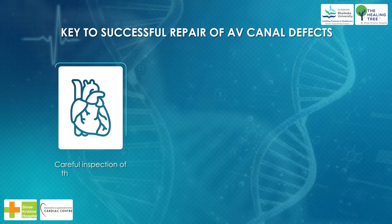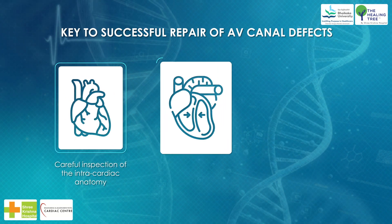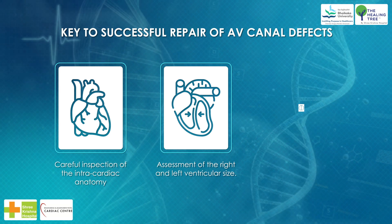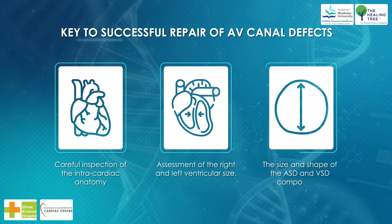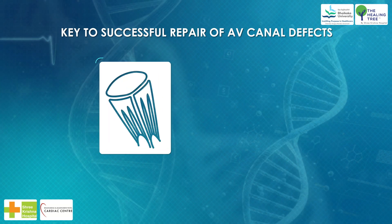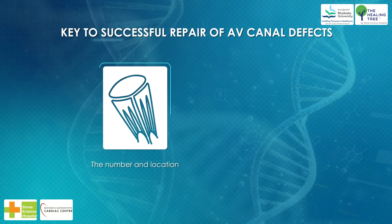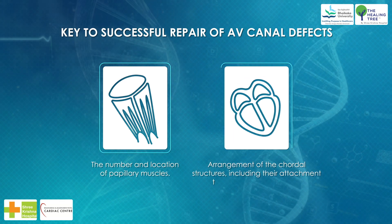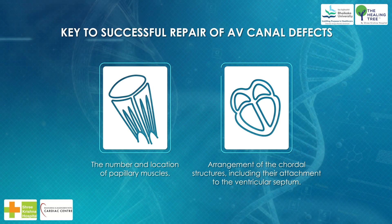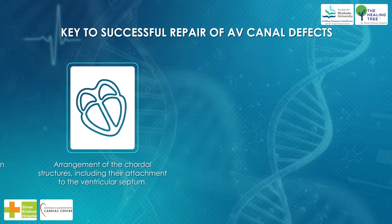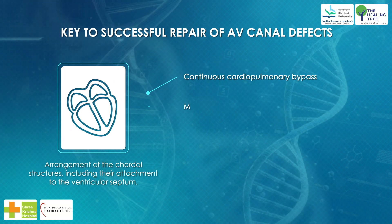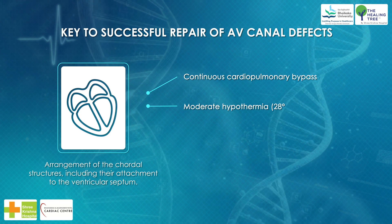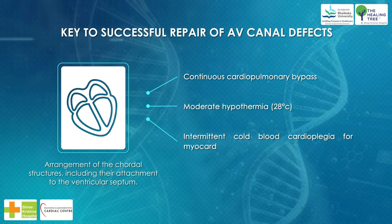Keys to successful repair of AV canal defects include: (A) careful inspection of the intracardiac anatomy, (B) assessment of the right and left ventricular size, (C) the size and shape of the ASD and VSD components, (D) the number and location of papillary muscles, and (E) arrangement of the chordal structures including their attachment to the ventricular septum.